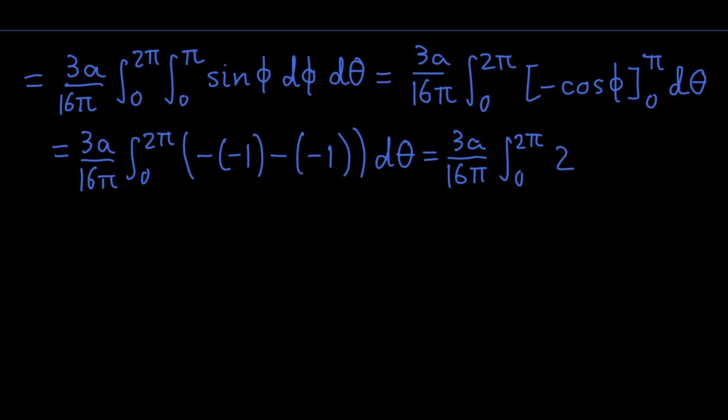And we can put the 2 out front, which gives us 6a over 16 pi, which of course you can simplify to 3a over 8 pi. And we have a d-theta over here.